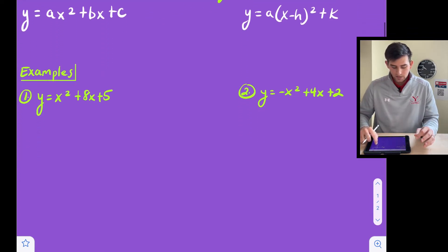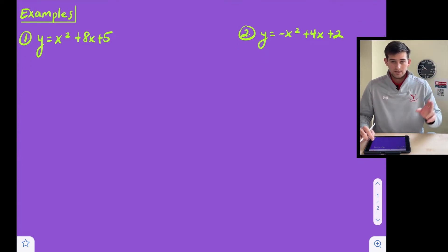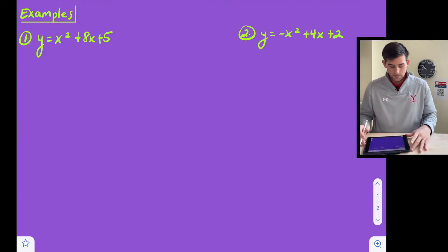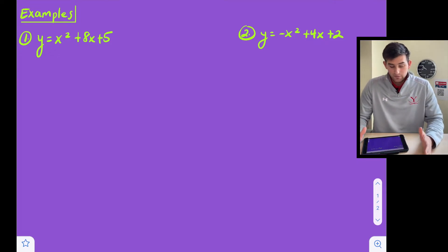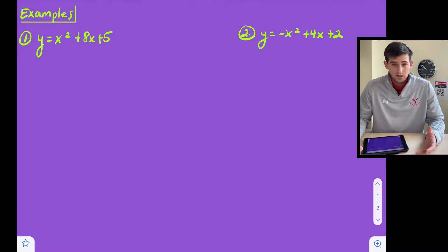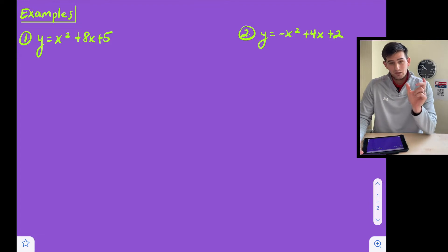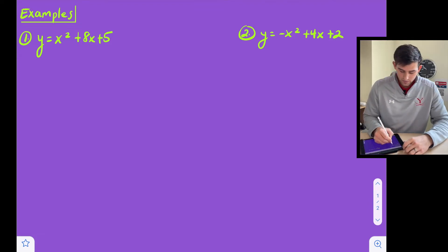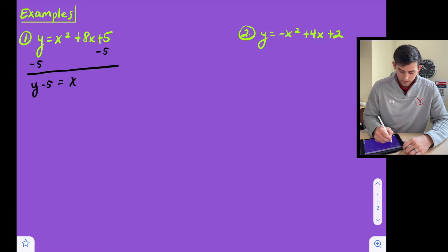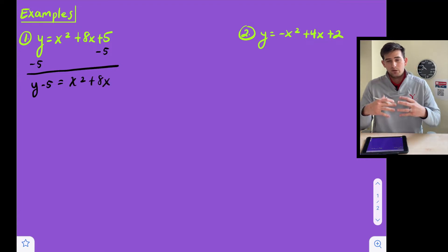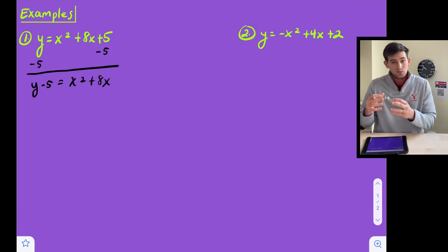We have two different examples to look at. Example one is a parabola that opens up, and example two is a parabola that opens down. For example one, the first thing we want to do is prepare our equation for completing the square. To do that we need to have x squared plus bx by itself. So in this case we subtract five from both sides, so that now we have y minus five equals x squared plus eight x.